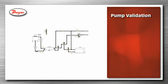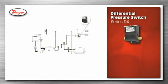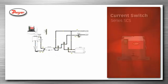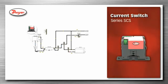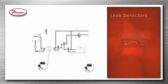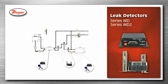Dwyer offers several products that can be used for pump validation, proving that the pump is operating and there is water flow. A differential pressure switch, series DX, or a differential pressure transmitter, series 629, can be used by monitoring the differential pressure between upstream and downstream of the pump. Series SCS current switch can be used by monitoring the current usage of the pump. Paddle flow switches, including model FS-2, series V8, or series V7, can be used by monitoring the water flow exiting the pump. Series WD and WD2 leak detectors are used to detect leaks of fluids around equipment and valves or to detect full drip pans.